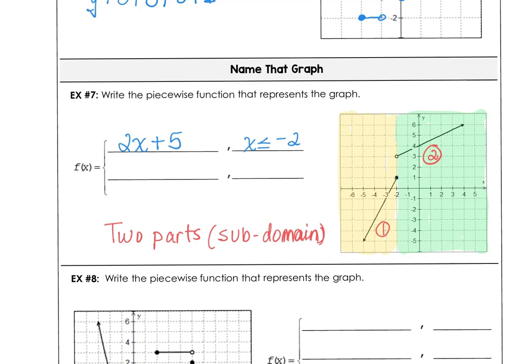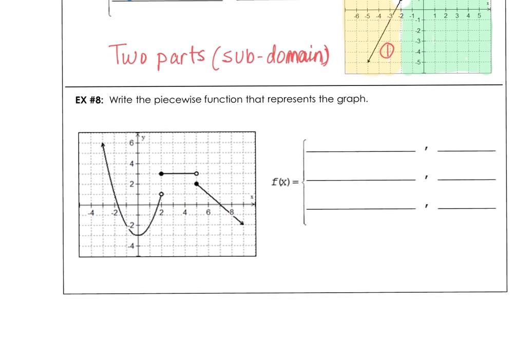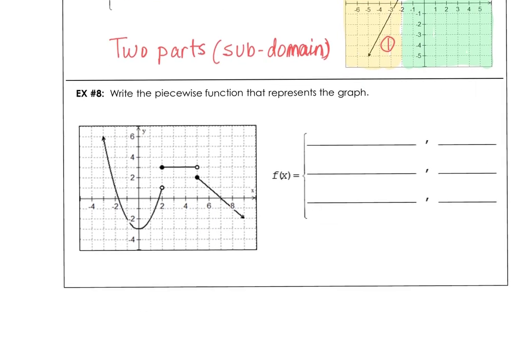And then for the remaining piece, we have a slope of a half and the y-intercept is 4. So that equation is going to be one half x plus 4 and that domain would be for x greater than negative 2. Now you may want to turn off the video and try example eight on your own and come back and check your work with my work.